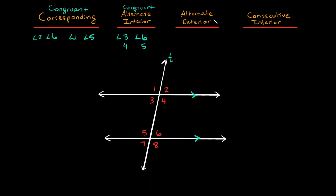Now let's talk about alternate exterior angles. These are also congruent. Alternate exterior angles would be the angles that are basically outside of your sandwich — so one, two, and seven, eight. Those are outside of the parallel lines. And again, you have to go diagonally. So here one and eight would be a pair of alternate exterior angles, and then the other one would be two and seven.